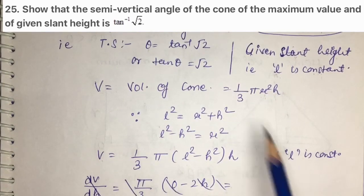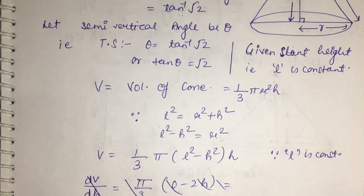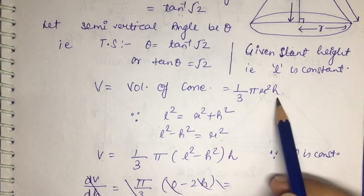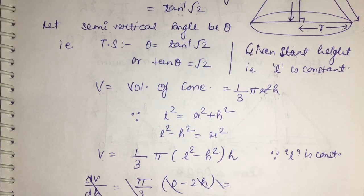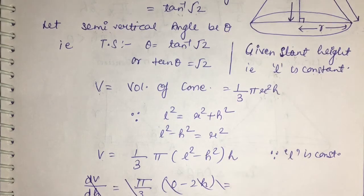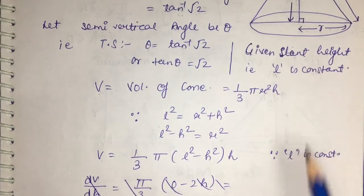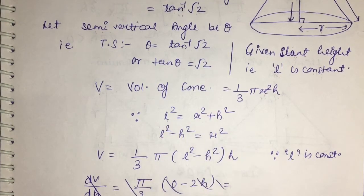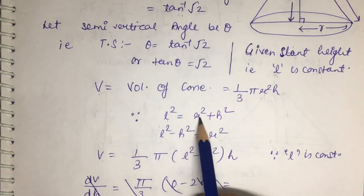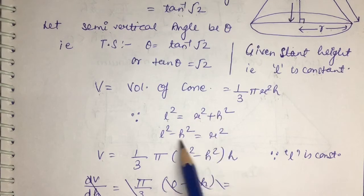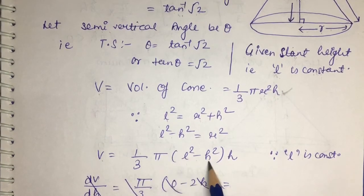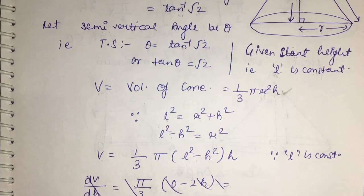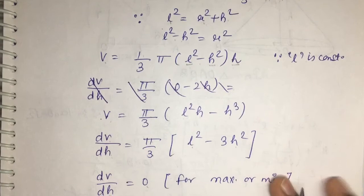Volume of the cone V = (1/3)πr²h. We need to convert this to one variable to apply the second derivative test. The information given is that L is constant. The relation between slant height, radius, and height is L² = r² + h², so r² = L² − h². Substituting this, volume becomes V = (1/3)π(L² − h²)h, which gives V = (1/3)π(L²h − h³).